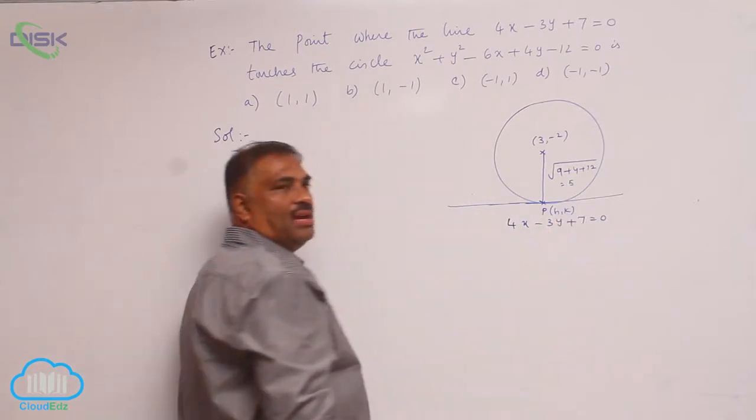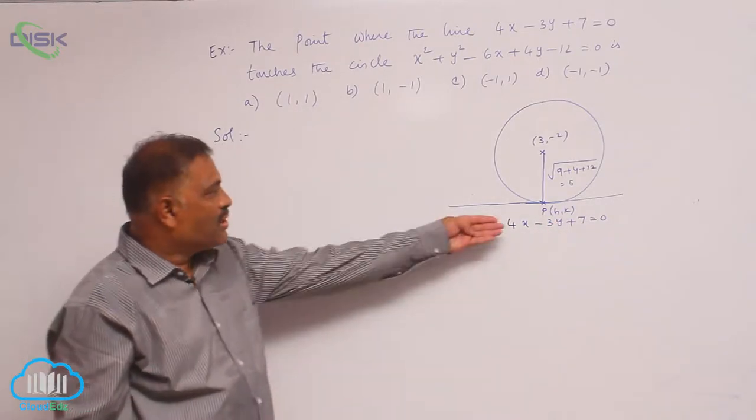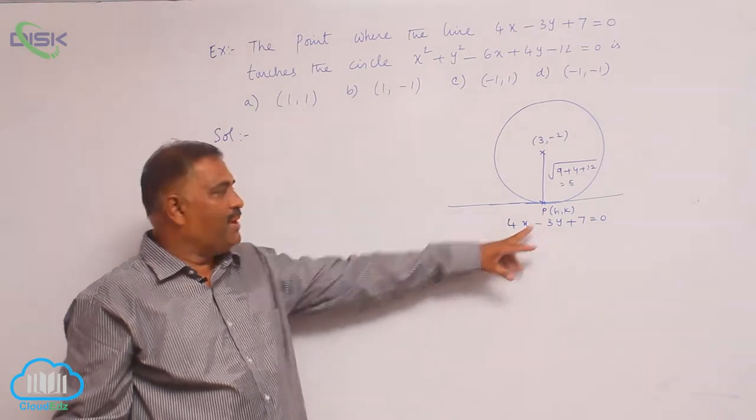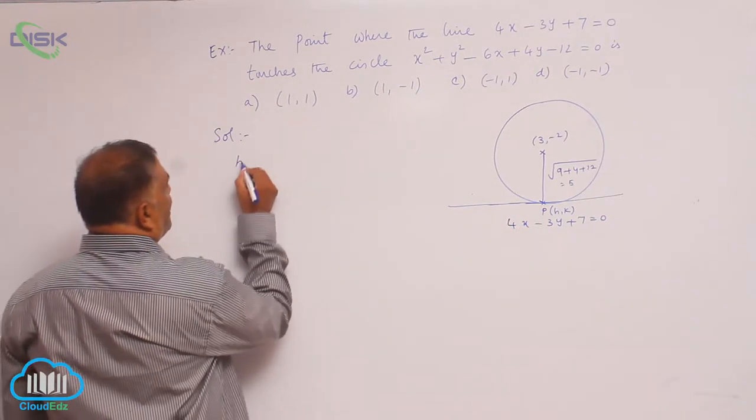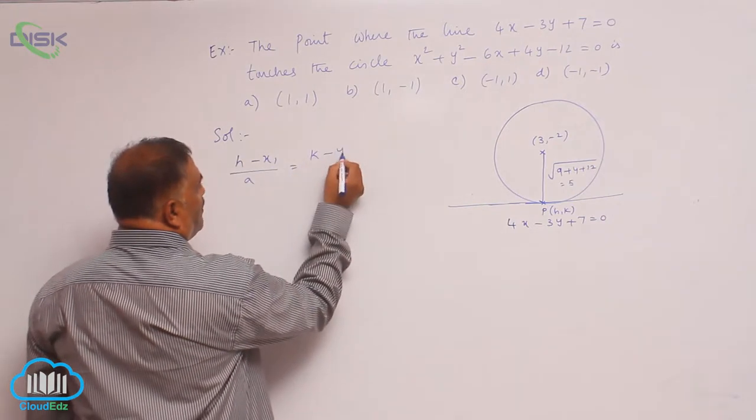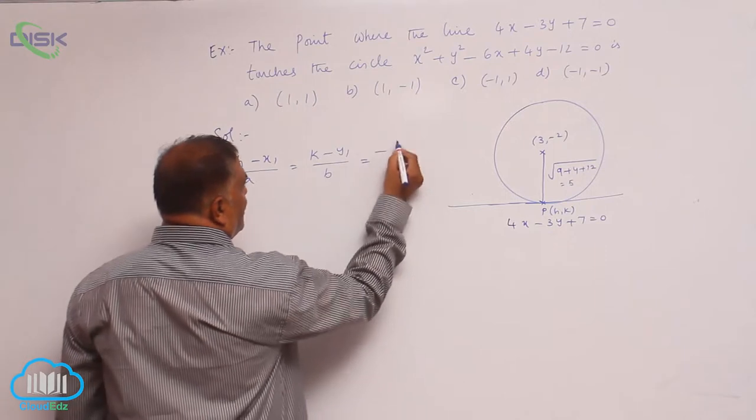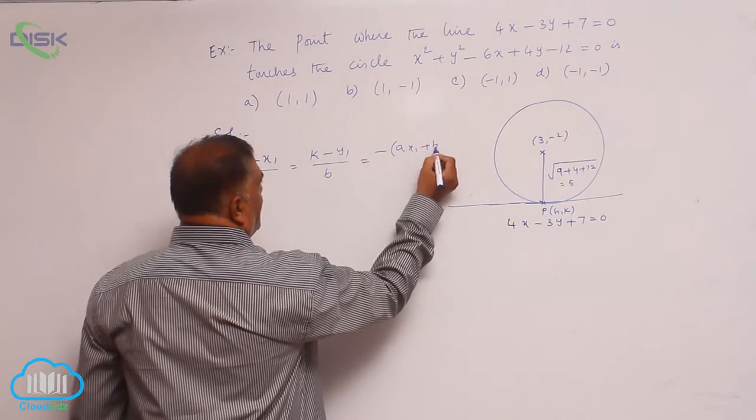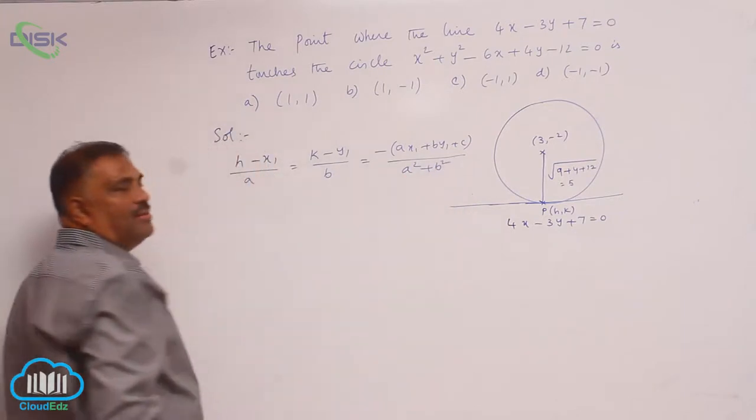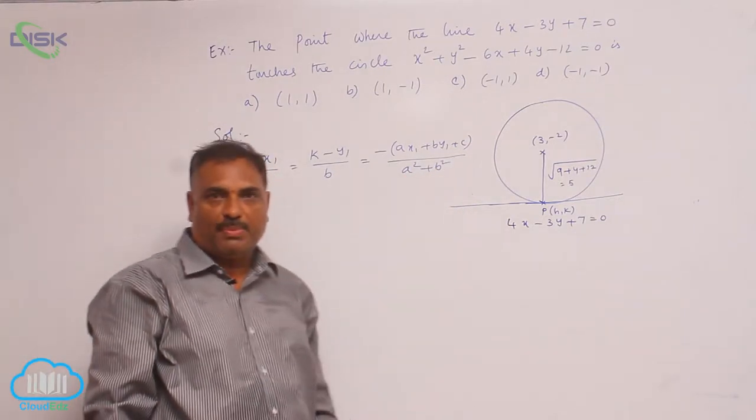Assuming that h comma k from first year foot of the perpendicular formula you can apply to find out this point p. So what is our formula: h minus x1 by a is equal to k minus y1 by b is equal to minus of ax1 plus by1 plus c by a square plus b square. This is general formula foot of the perpendicular.